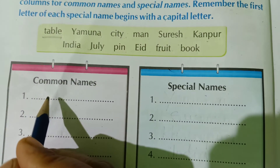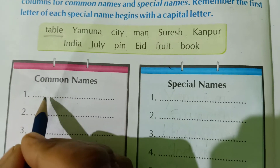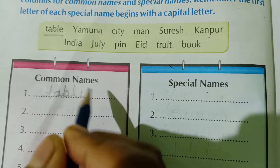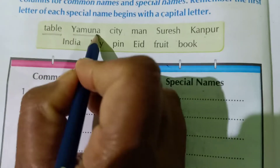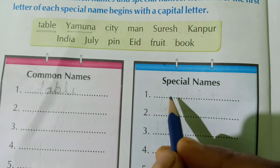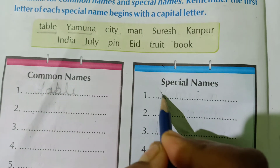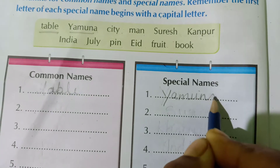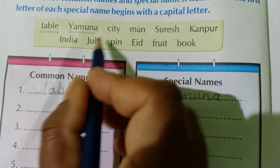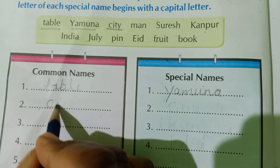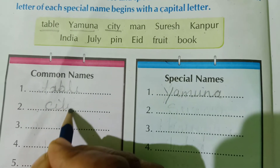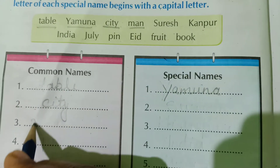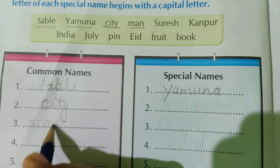Table is a common name, so write here 'table'. Second, Yamuna — Yamuna is the special name of a river, so write here 'Yamuna'. Then, city — city is a common name, so write here 'city'. Man — man is also a common name, so write here 'man'.